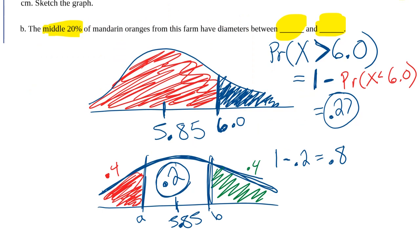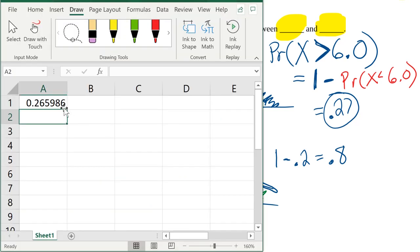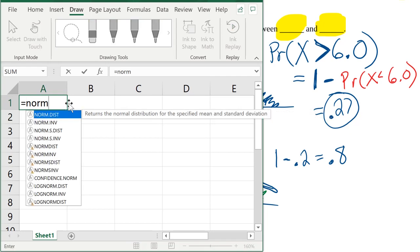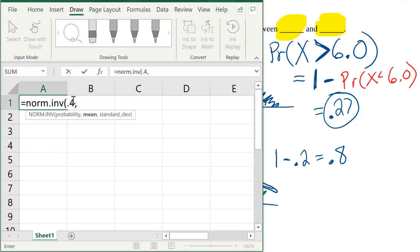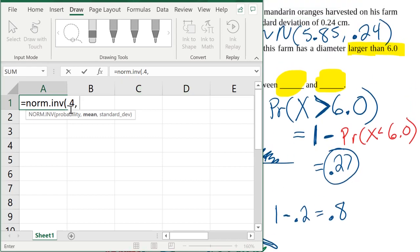The red and the green area both must be 0.4. 40% is in each tail. So figuring out what A is, it's pretty simple now. I can go to Excel and figure this out. The area behind A is just 0.4. So let me delete this. And I'm going to use the norm inverse function. Always for percentiles, you use norm inverse. And the probability is 0.4. The mean of this distribution is 5.85 and the standard deviation is 0.24. Close parentheses and press enter.